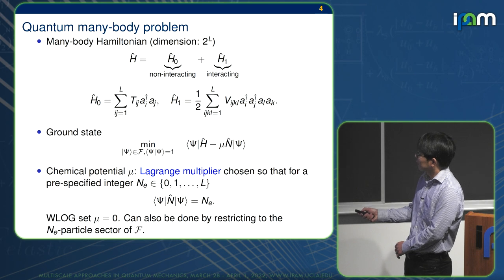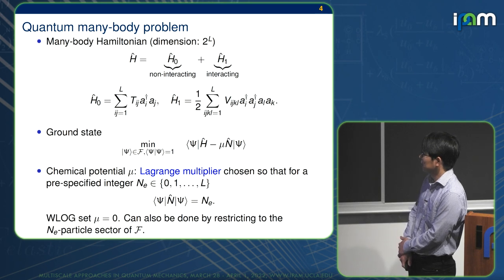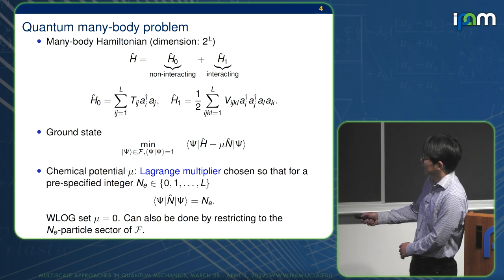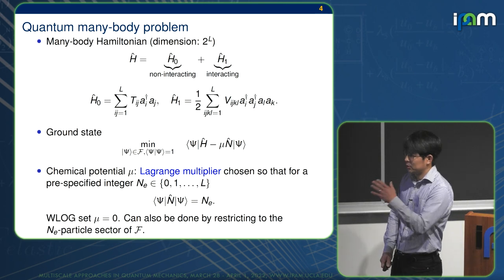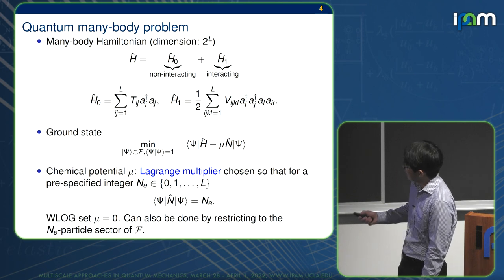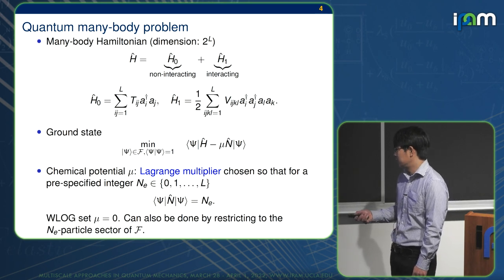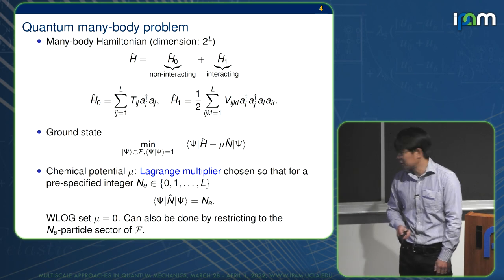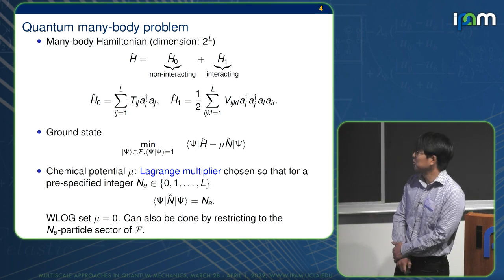You can then minimize, adjust the Lagrange multiplier called the chemical potential, so that the minimizer satisfies this constraint. Without loss of generality, we can always absorb this quadratic n into the t, so that we can set mu equals 0, or you can just restrict this to the right any particle sector of the Fock space.